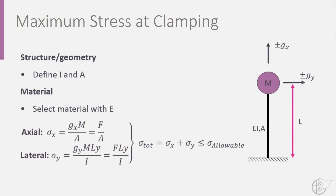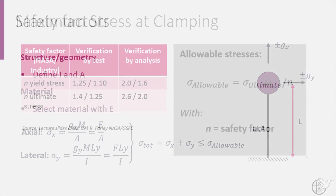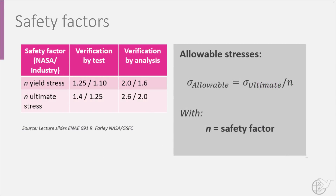Based on the minimum natural frequency, determine values for cross-section A and moment of inertia I, then select a material with modulus of elasticity E. Using the basic stress formula and the given minimum axial and lateral static loads Gx and Gy, determine the total stress. For the design to meet the maximum stress requirement, the stress found must be lower than the allowable stress, defined as the ultimate stress divided by safety factor n. This safety factor depends on the type of verification and the launch organization.